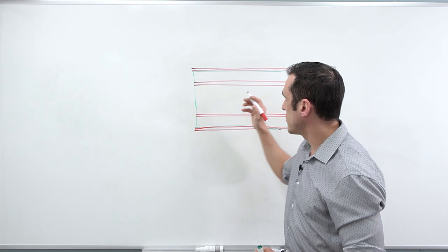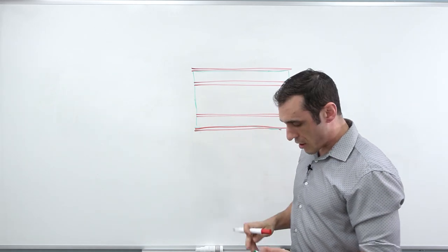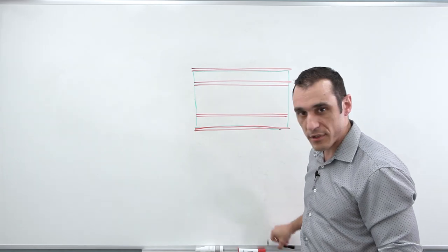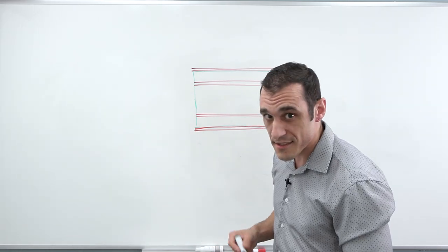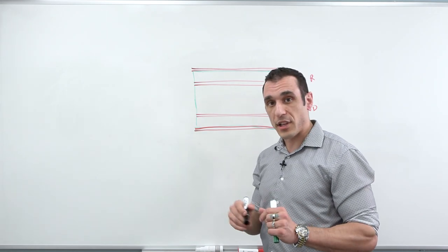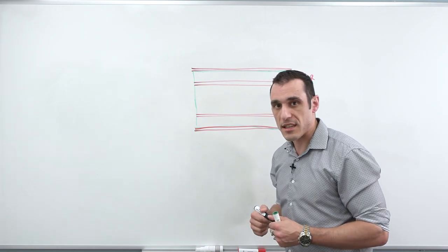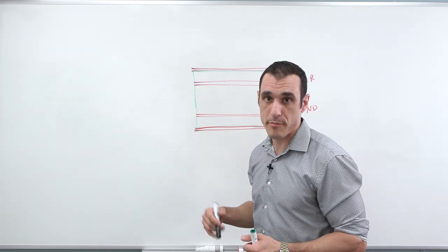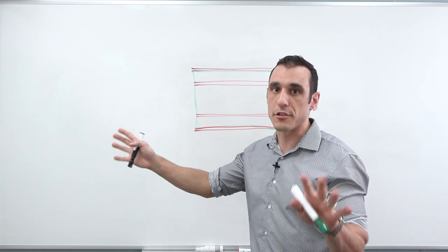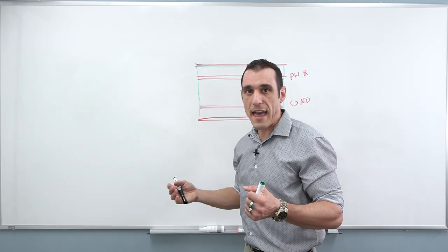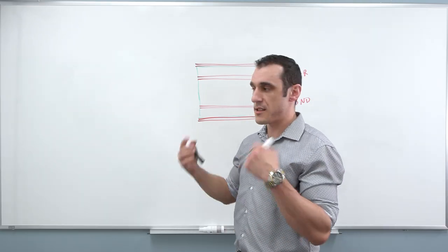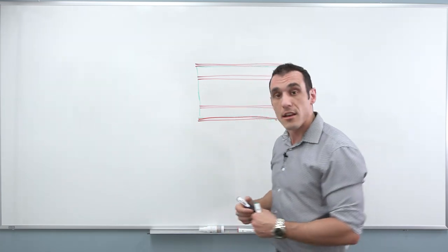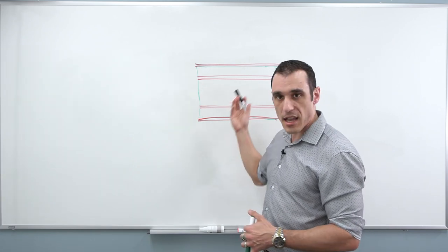I'm going to address the signal integrity problem first. It's actually related to what we talked about with mixed signal grounding and splitting planes. If you split planes in a mixed signal PCB and then route over the split, you lose the return path — effectively, the return path exists anywhere in the nearest conductor. The problem is you can create a big loop inductance, and that can be a source of EMI or an area to receive EMI. That's the big challenge with this type of board.